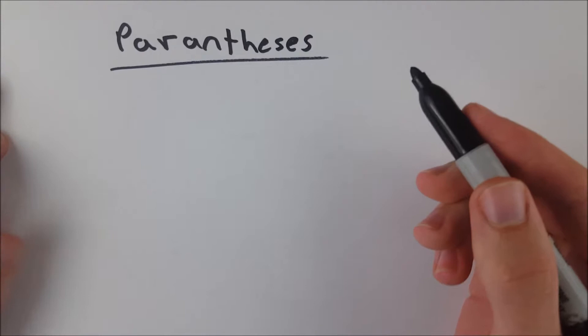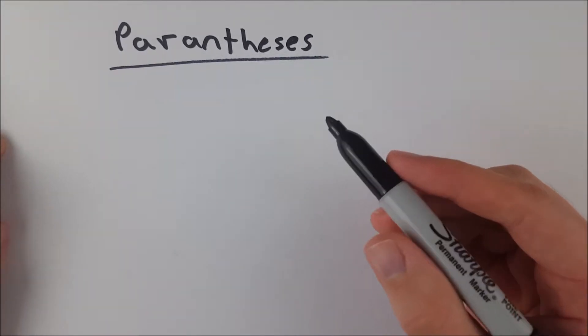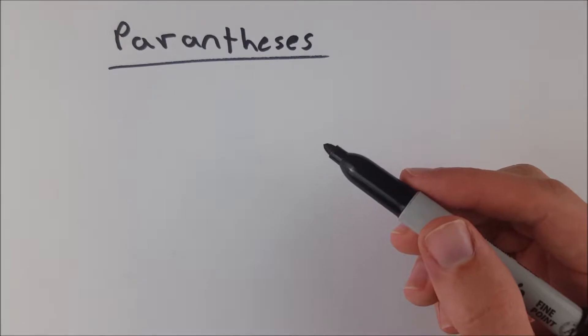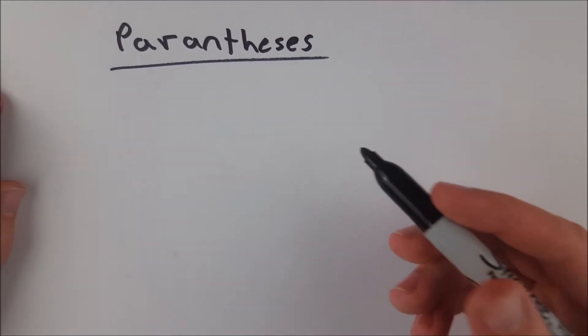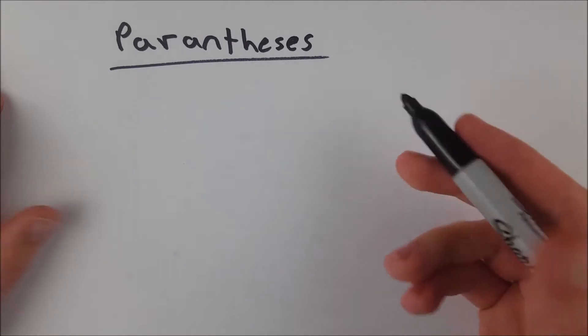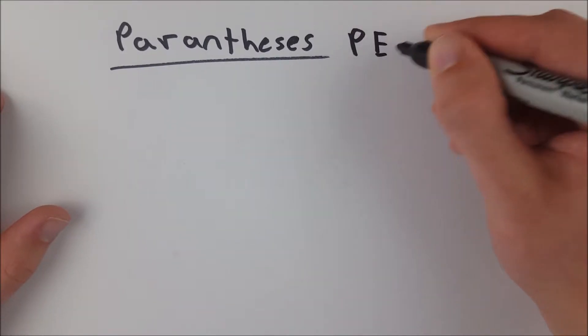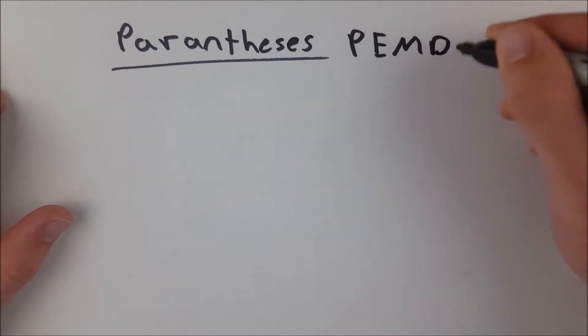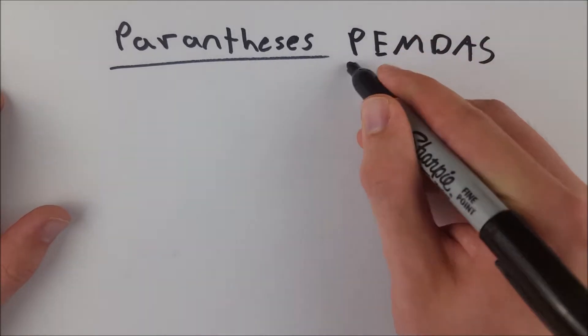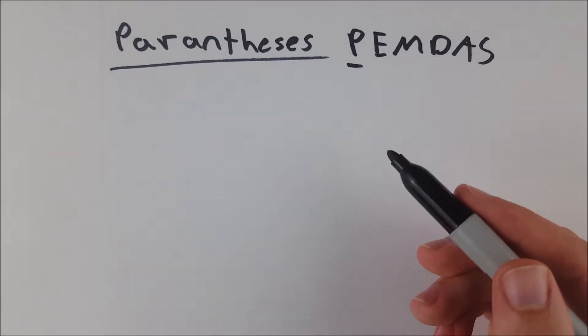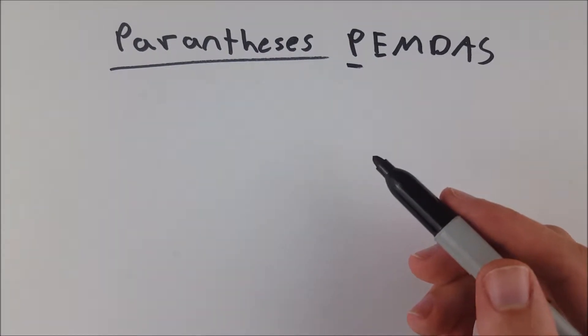Parentheses are sort of the most dominating force when we talk about order of operations. Parentheses explicitly specify the order in which operations should be completed when you are doing arithmetic. Of course, the popular acronym for the order of operations is PEMDAS and the P in this acronym stands for parentheses. So parentheses are what you will do first, everything inside the parentheses.